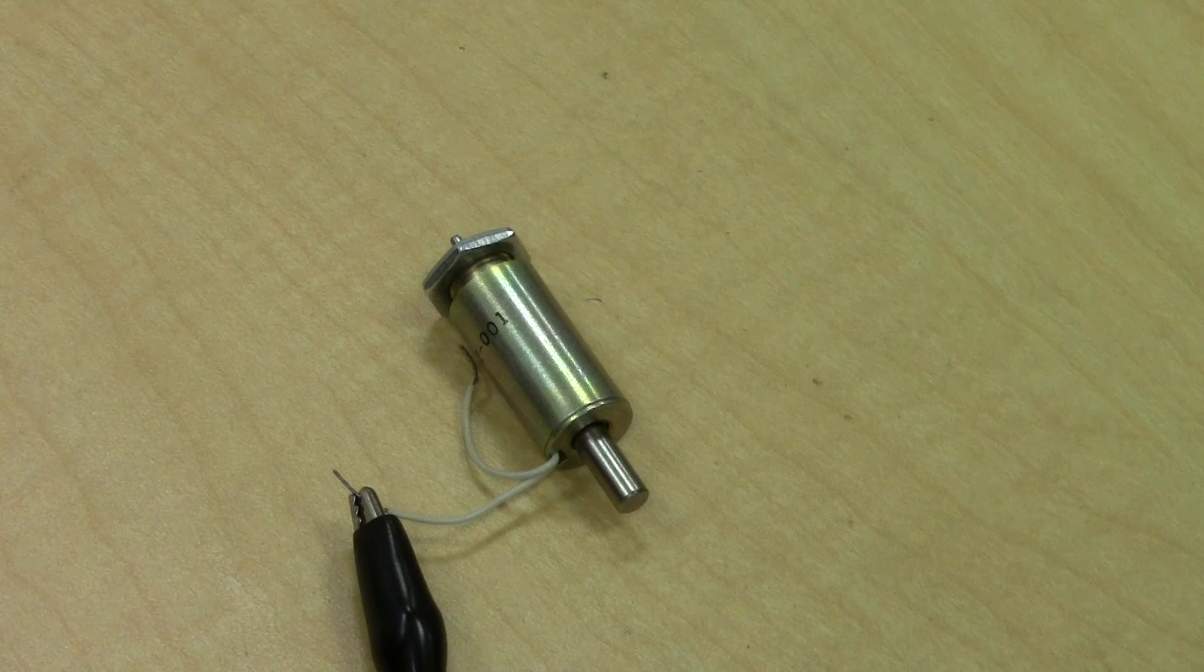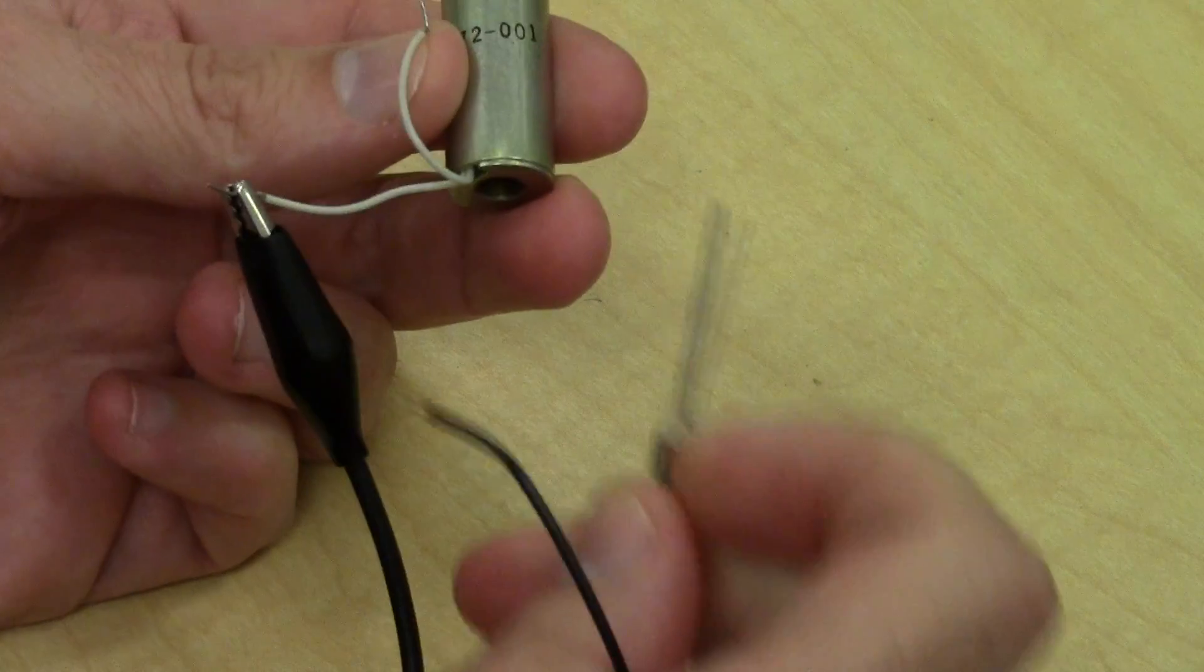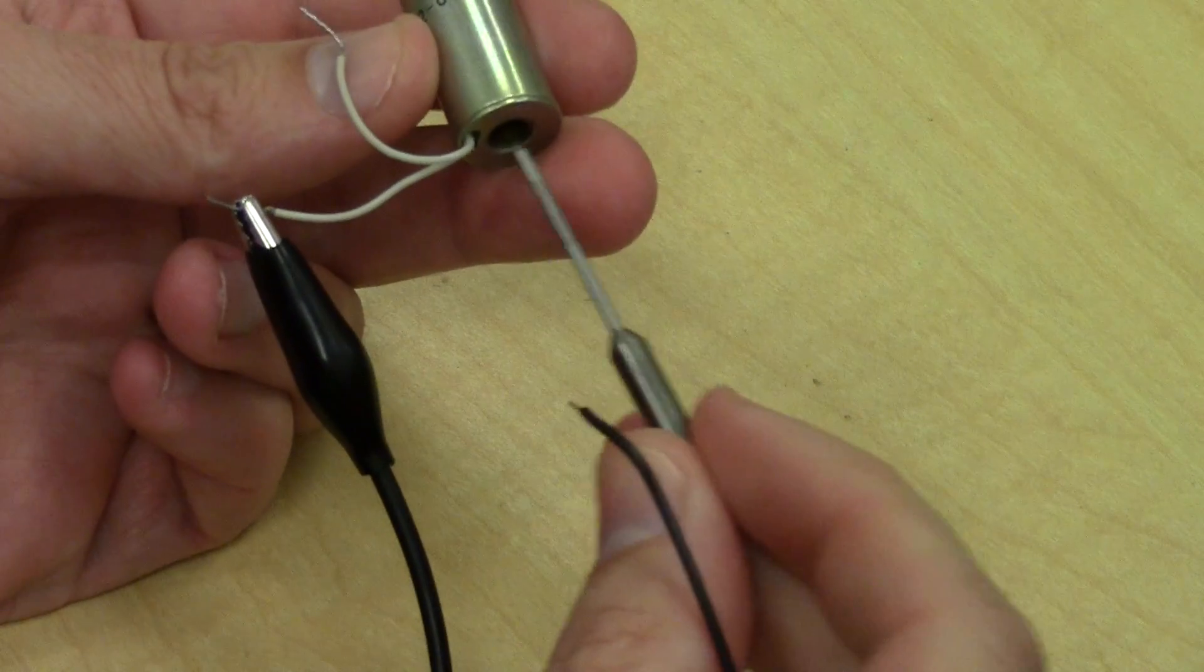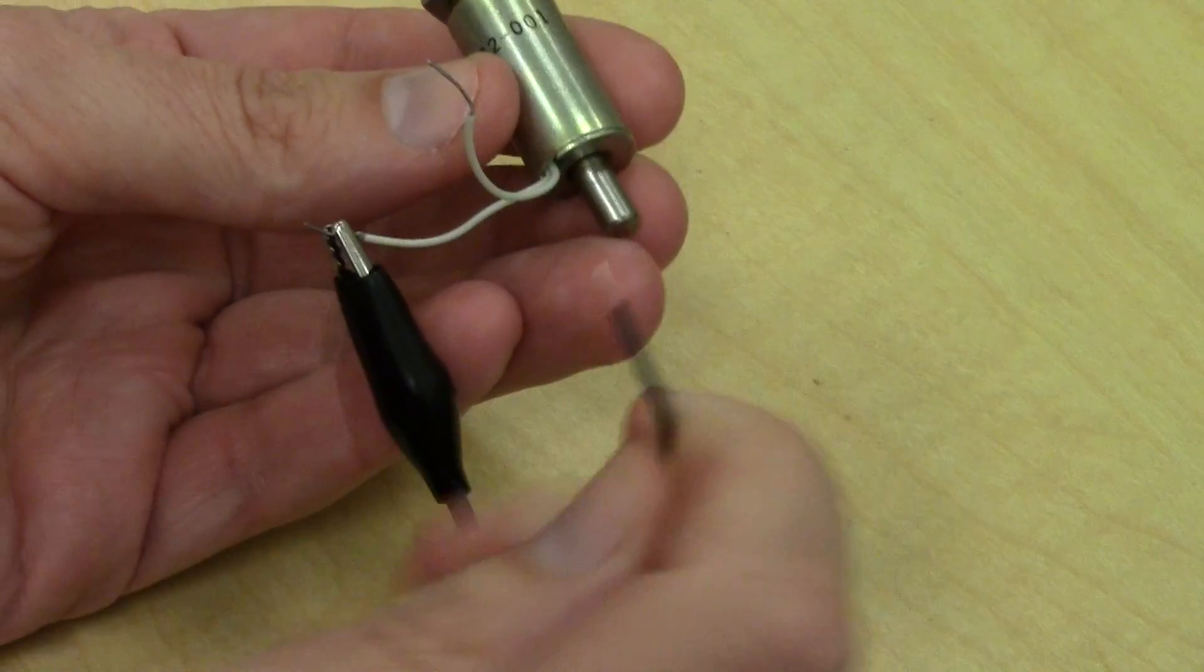So these are the solenoids that I bought. They're little 12-volt solenoids and they don't have that much pushing power. So I actually have them at 24 volts set up here.